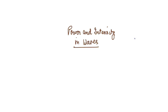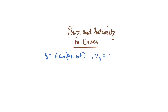Let's learn about power and intensity in waves. You have already studied that the displacement equation for a wave is given by y = a sin(kx − ωt), and the corresponding velocity of the particle is given by aω cos(kx − ωt).